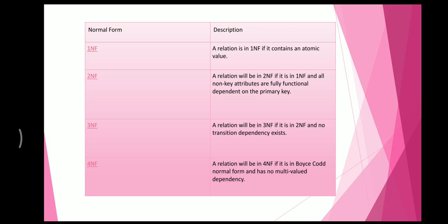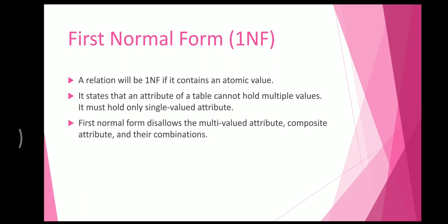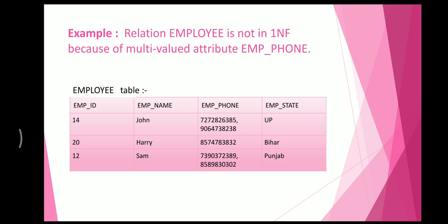Now we will see the explanation of each normal form. 1st Normal Form: a relation is in 1NF if it contains only atomic values. It states that an attribute of a table cannot hold multiple values — it must hold only a single value. 1NF disallows multi-valued attributes, composite attributes, and their combinations.